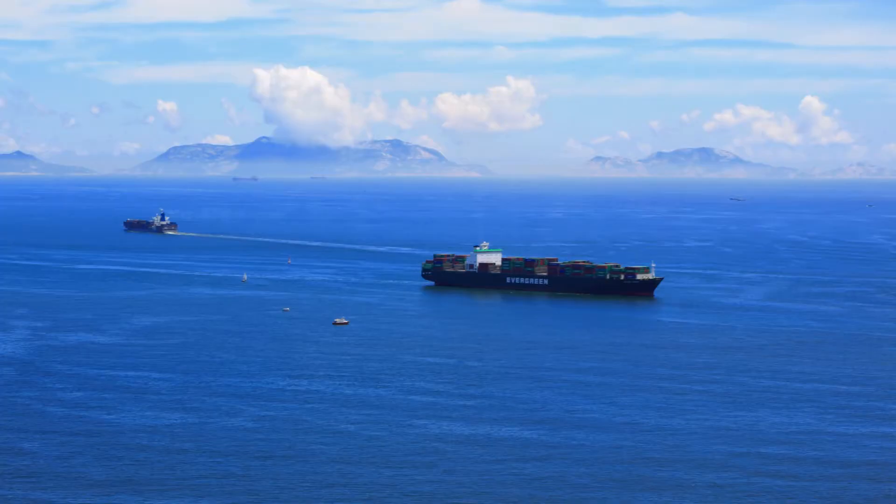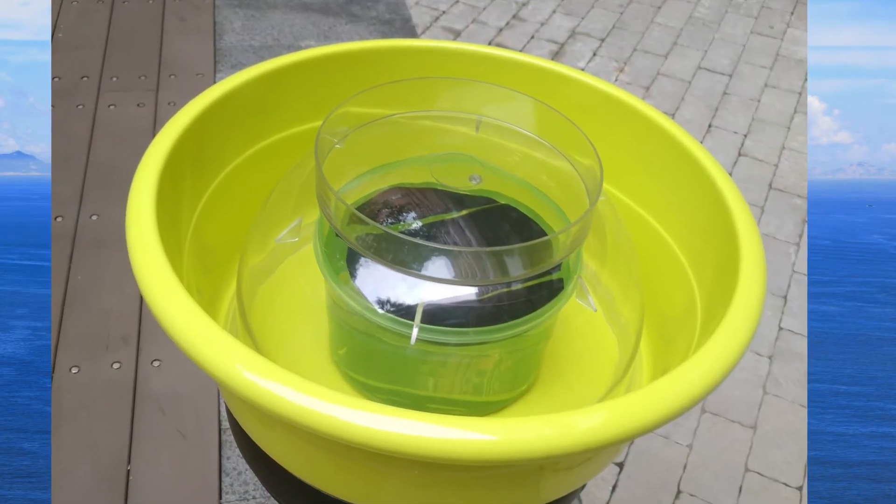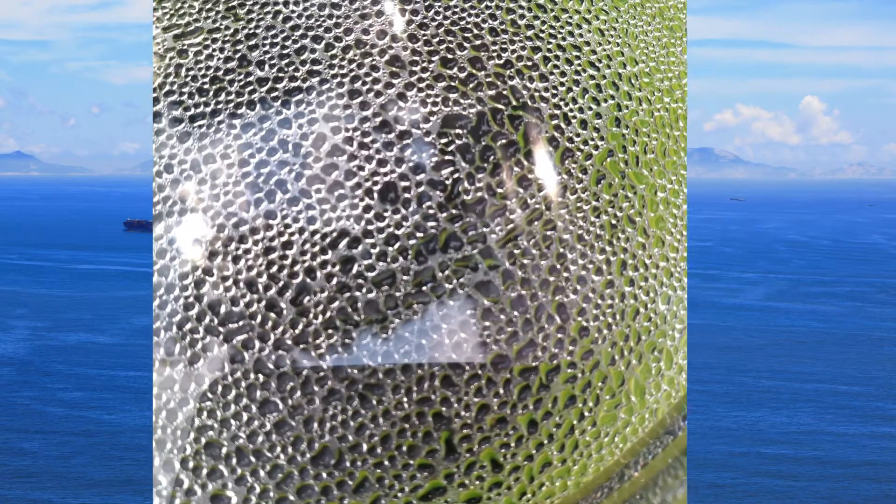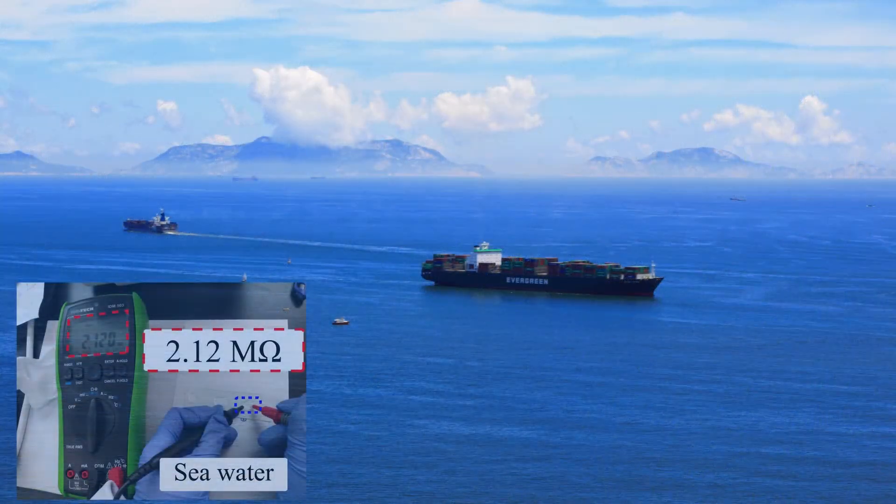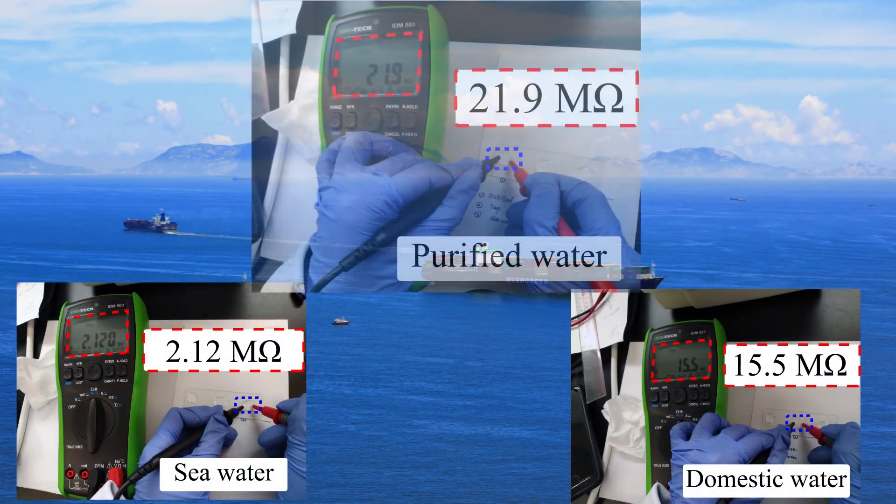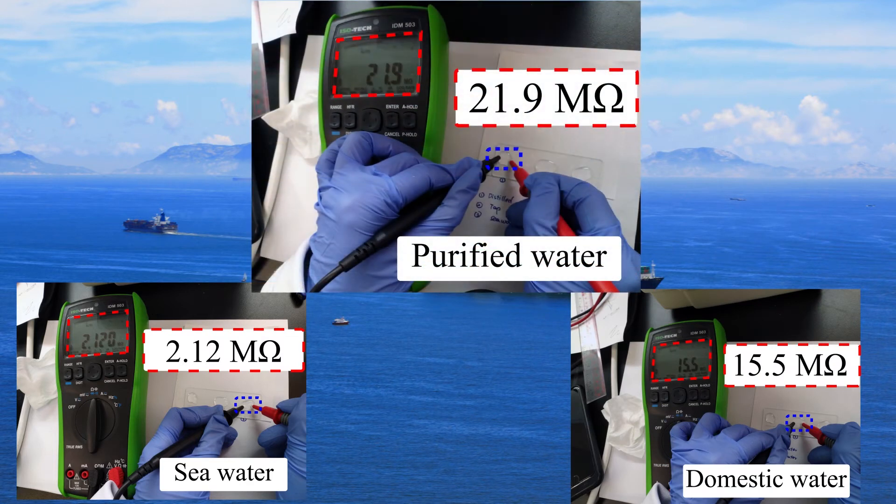In outdoor conditions, the desalinated water can be collected with bigger films and holders. After 4 hours illumination under sun, the glassware is fully filled with water droplets. The electrical resistance measurement proves the desalinated water is even purer than domestic water.